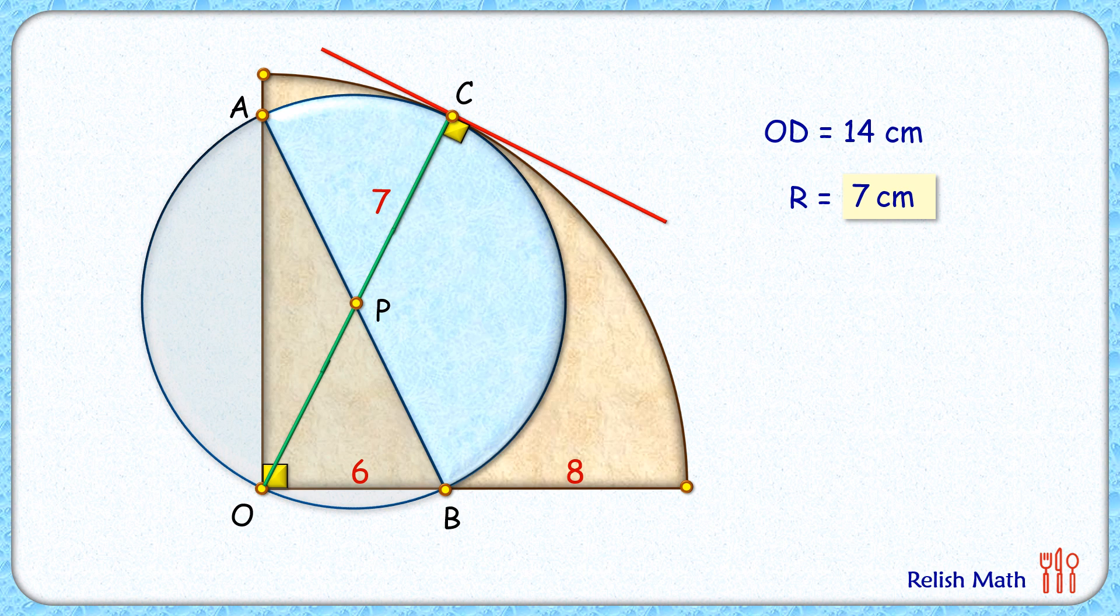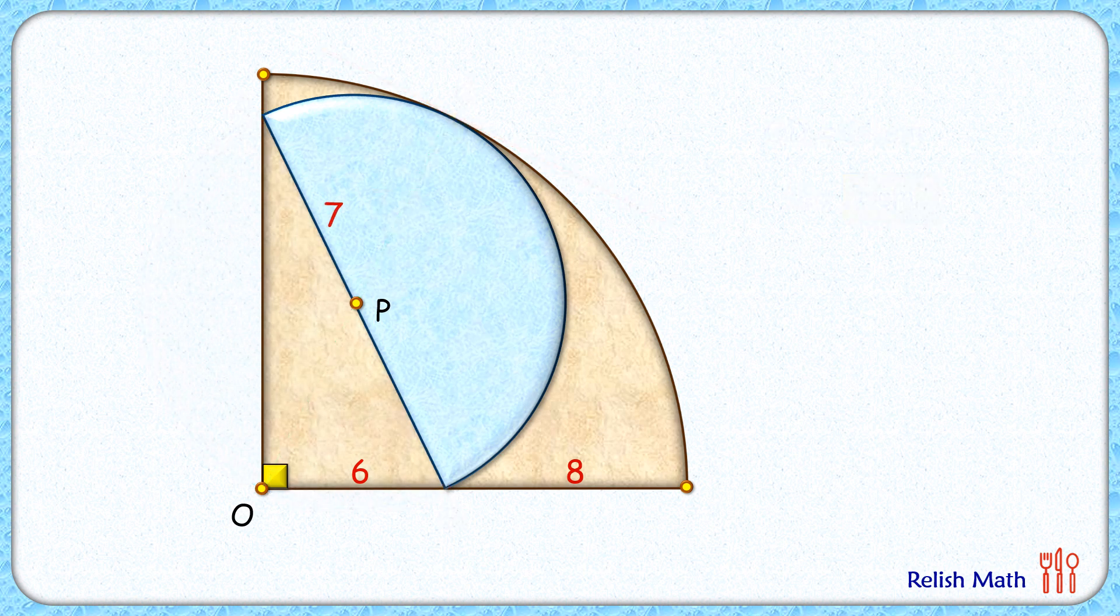So for our observation, let's first remove all the construction which we have done. Now in our solution for radius 7 cm, we have not used the fact that it's dividing this radius of the quadrant into 6 and 8 cm.